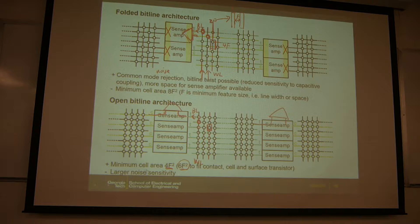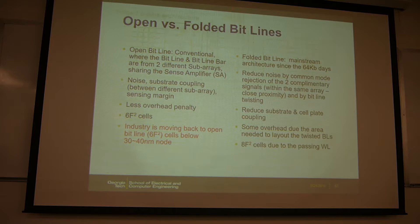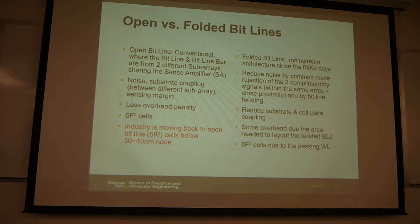The downside of open bitline architecture is larger noise. The sense amp now gets inputs from different arrays, and different arrays may have different noise patterns, so you cannot reject the common noise. This is the summary between open bitline and folded bitline. The industry moved to 6F squared below the 130–48 nanometer technology node, around 2008 or 2009, and for the past decade has used 6F squared open bitline architecture.